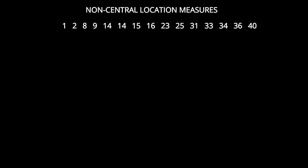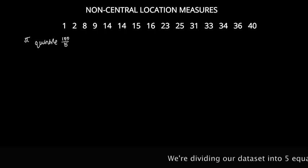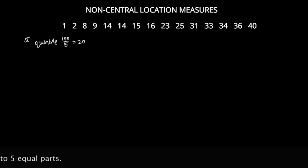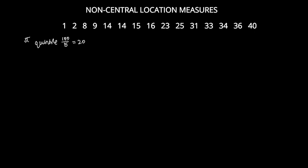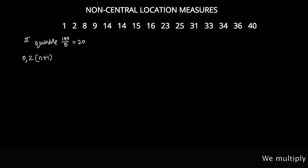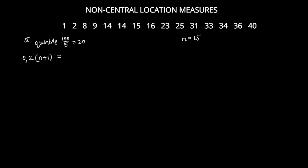Sometimes when we calculate a quintile, quartile, decile, or percentile, we don't always get a whole number for the position. For the first quintile, dividing 100 by 5 gives 20. Converting to a decimal gives 0.2, multiplied by n plus 1: 0.2 multiplied by 16 gives 3.2.